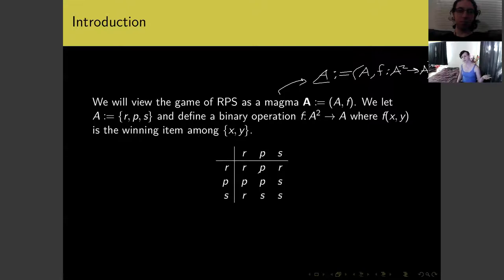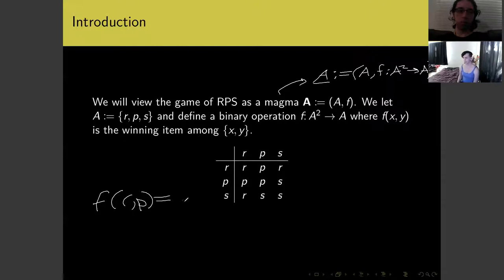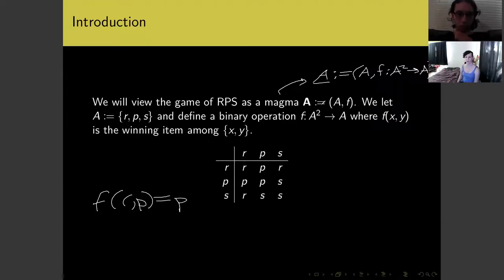We can write out these relationships as a table, or in other words, as a binary operation. For example, F(R, P) represents that the first player chose rock and the second player chose paper. Since paper covers rock, paper is the winner. So we can view this simple game as a binary multiplication on a set with three elements — an example of a magma, a kind of algebraic structure we might want to study.